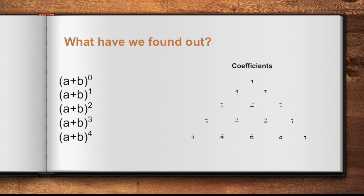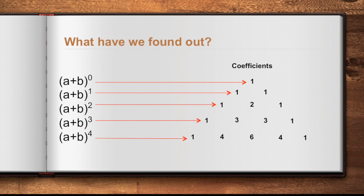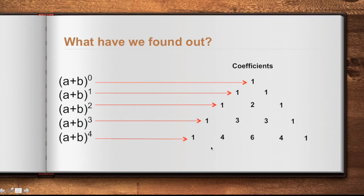So (a + b) to the power of 0 corresponds to the uppermost coefficient in Pascal's Triangle: 1. (a + b) to the power of 1 gives coefficients 1, 1. (a + b) to the power of 2 gives coefficients 1, 2, 1. (a + b) cubed gives coefficients 1, 3, 3, 1. And (a + b) to the power of 4 gives coefficients 1, 4, 6, 4, 1. The next row of Pascal's Triangle will give the coefficients for (a + b) to the power of 5: 1, 5, 10, 10, 5, 1.